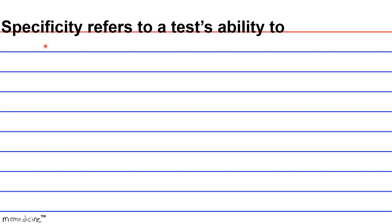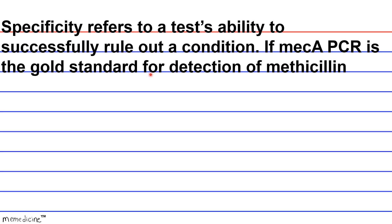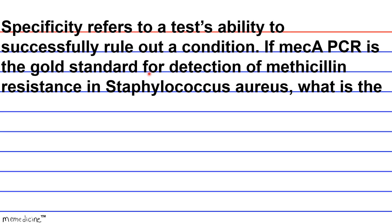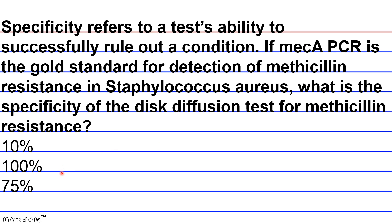Question 4: Specificity refers to a test's ability to successfully rule out a condition. If mecA PCR is again the gold standard for detection of methicillin resistance in Staphylococcus aureus, what is the specificity of the disc diffusion test for methicillin resistance? Is it A. 10%, B. 100%, C. 75%, or D. 50%?